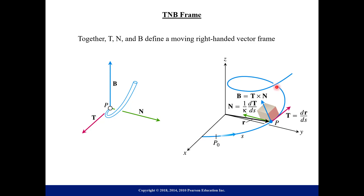Here's another visual: the light blue curve is what your object is traveling along. Notice T lets you know your object is traveling up the curve, N points inward toward the turning direction, and B is perpendicular to both. You can think of the bottom of this box as the plane containing N and T, and B tells you about the tendency of the curve to twist out of that plane.